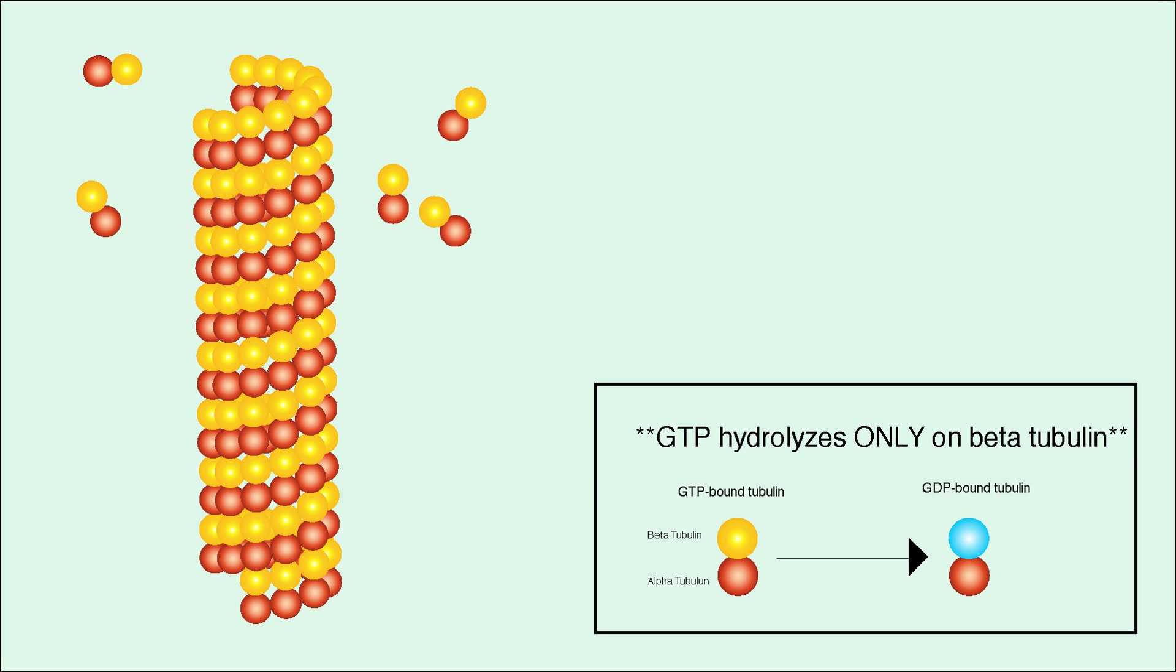During assembly, the only dimers that get added to the plus end are those with GTP-bound beta tubulin. GTP-bound dimers form strong bonds that don't easily break. This means that when dimers are being added, the plus end is very stable.